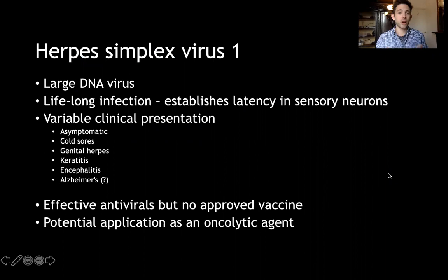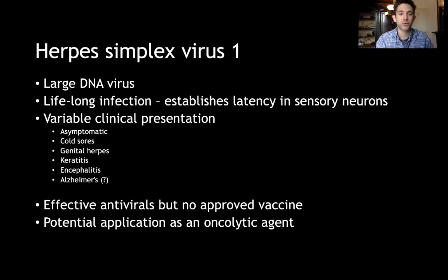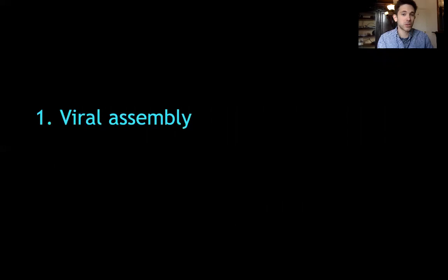Herpes simplex virus is a large DNA virus that establishes lifelong infection in sensory neurons, and it tends to have variable clinical presentation. Most people are completely asymptomatic. Some people have mild symptoms such as cold sores and genital herpes, and fewer people still have severe inflammation such as keratitis and encephalitis. There may even be a link between HSV and Alzheimer's. There are effective antivirals against the virus, but there is no cure and no approved vaccine. The virus also has applications as an oncolytic agent to treat melanoma, but the work that we do is mostly basic research, and my main focus is on understanding the assembly of the virus.